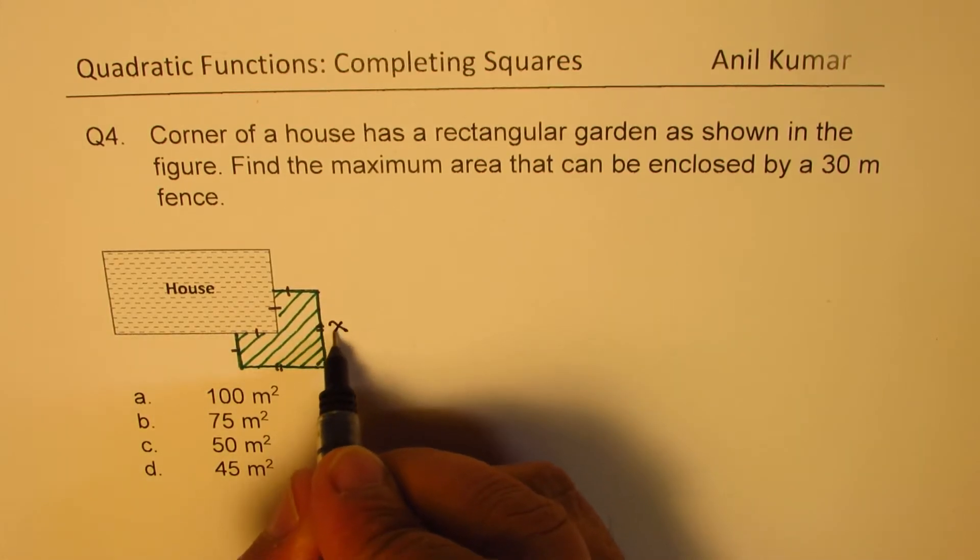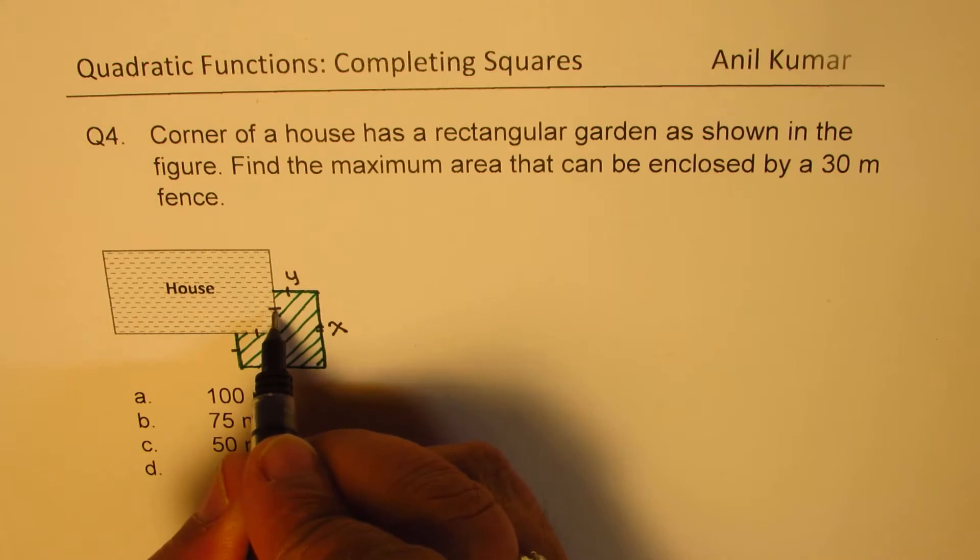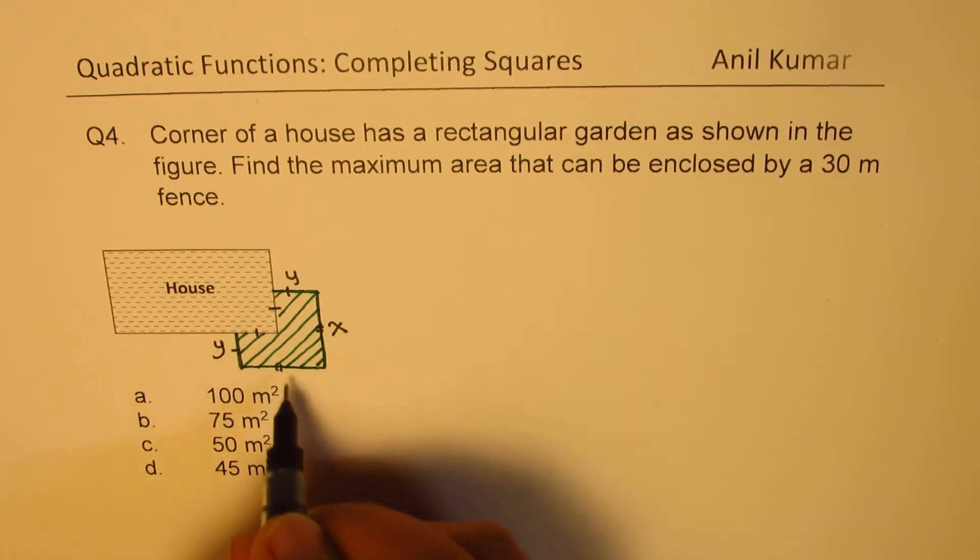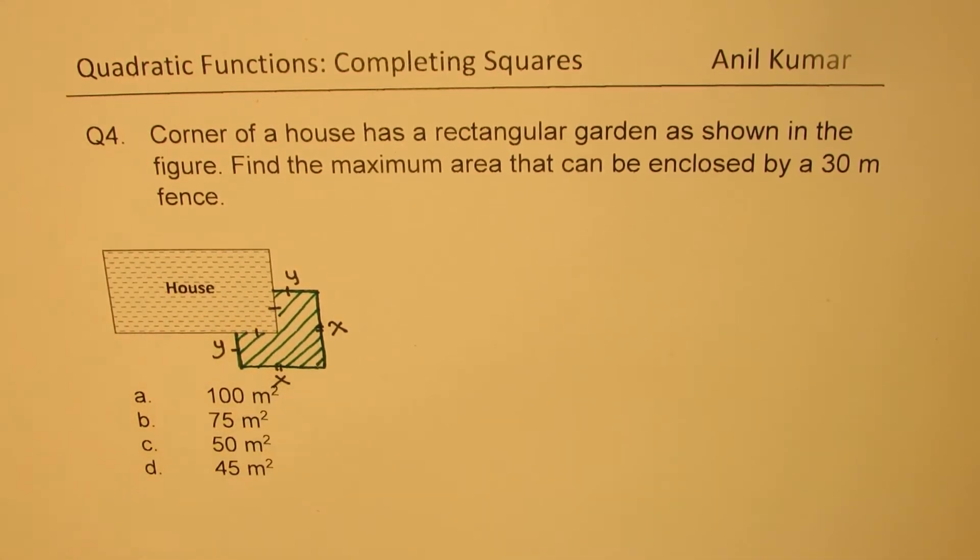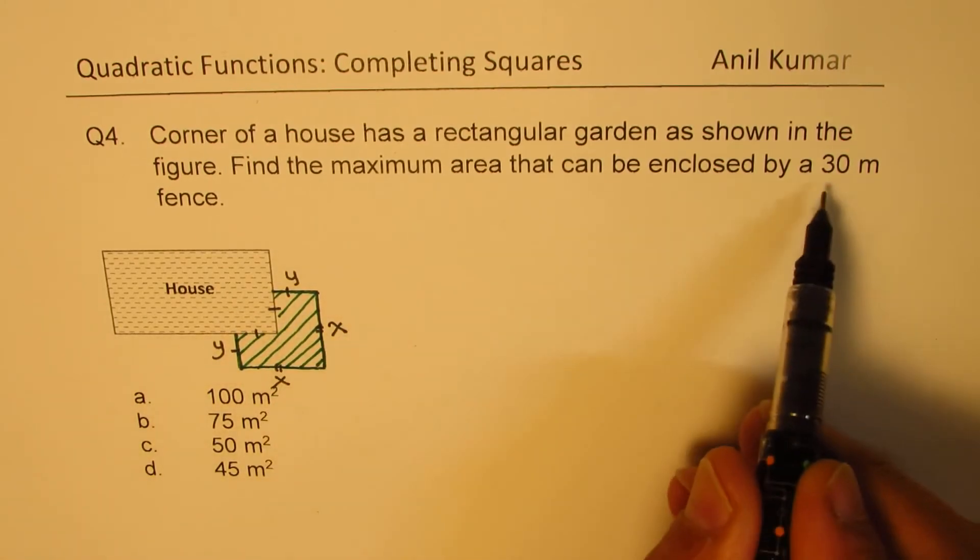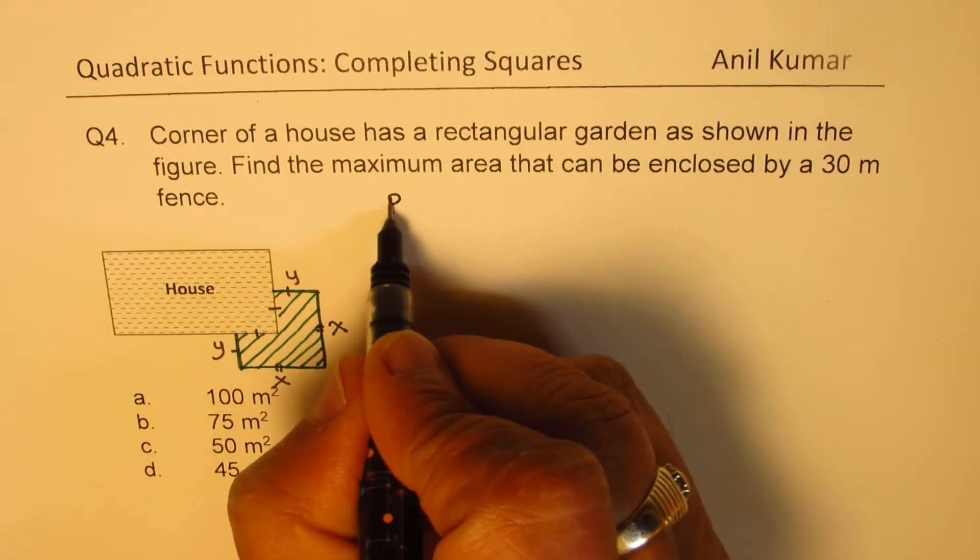The other side is y. These are equal sides, so this is also y and this is x. Since we know the perimeter is 30, we can write one equation.